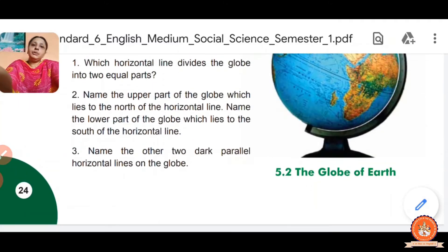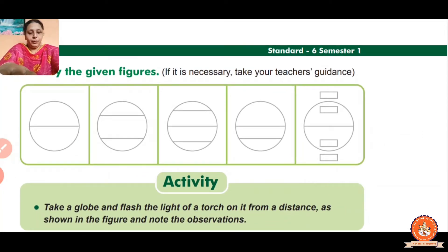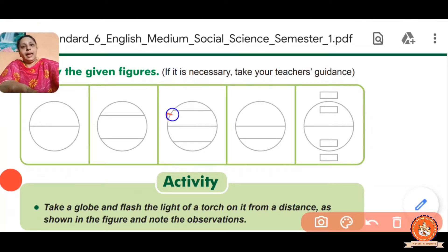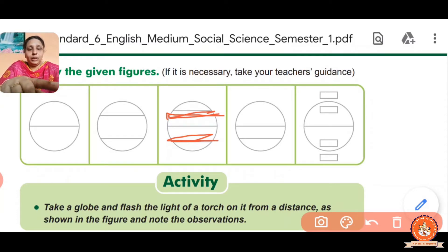Name the other two dark horizontal lines on the globe. The line on the north side is called the Tropic of Cancer. And the line on the south side is called the Tropic of Capricorn. There is also the Arctic Circle above the Tropic of Cancer, and the Antarctic Circle below the Tropic of Capricorn.